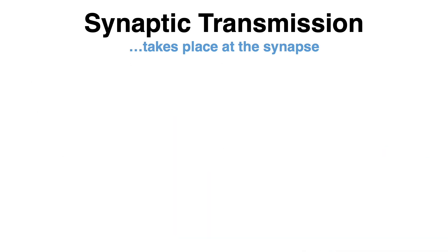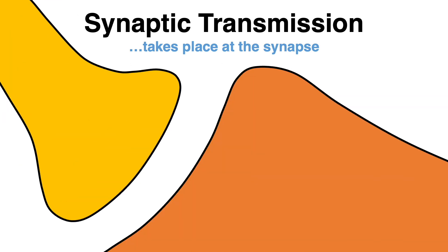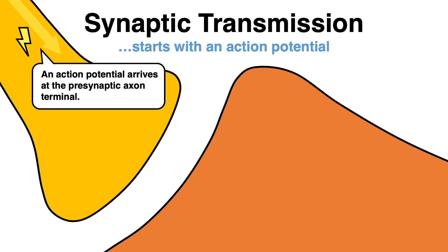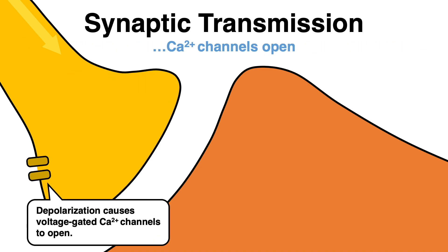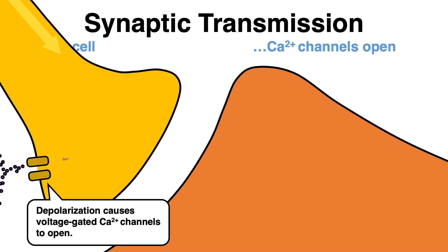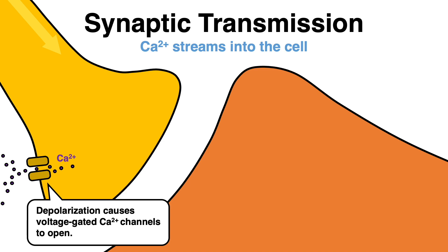The synaptic transmission starts off with an action potential that arrives at the axon terminal of the presynaptic cell. In response to that, voltage-gated calcium channels in the cell membrane are activated and, as a result, calcium, which is much more abundant outside the cell, streams into the interior of the cell.